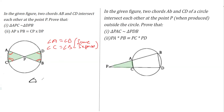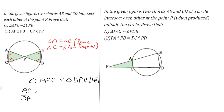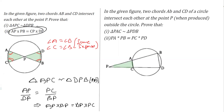Once we write these two angles as equal, we can say the triangles are similar. Triangle APC is similar to triangle DPB — A corresponds to D, P corresponds to P, and C corresponds to B — by the AA similarity condition. From the proportional sides we get AP/DP = PC/BP, and by cross multiplication: AP × BP = DP × PC, which is what we needed to prove.